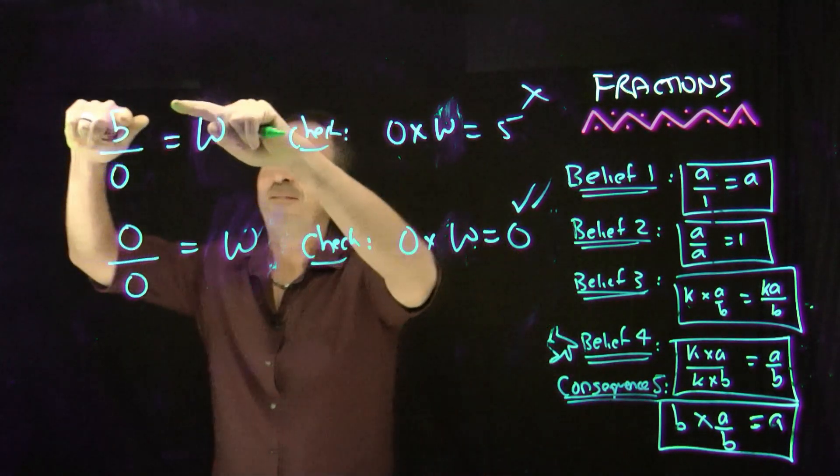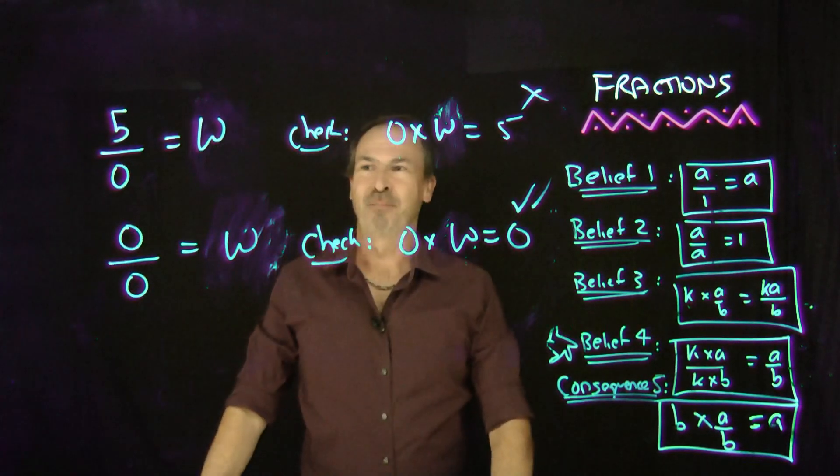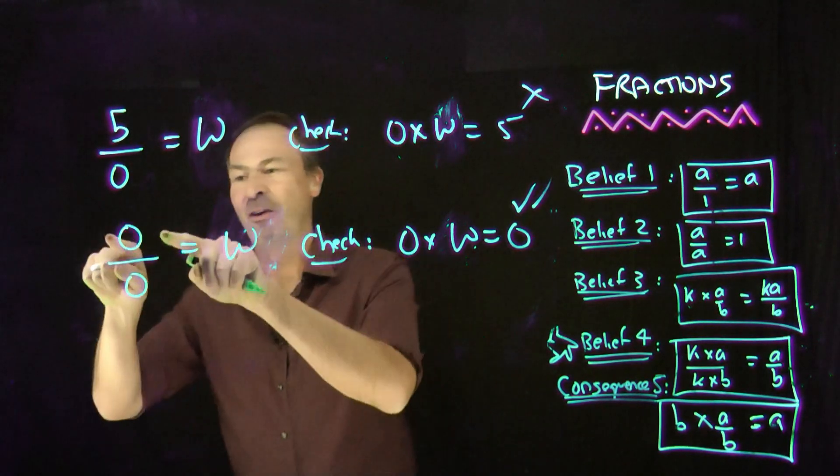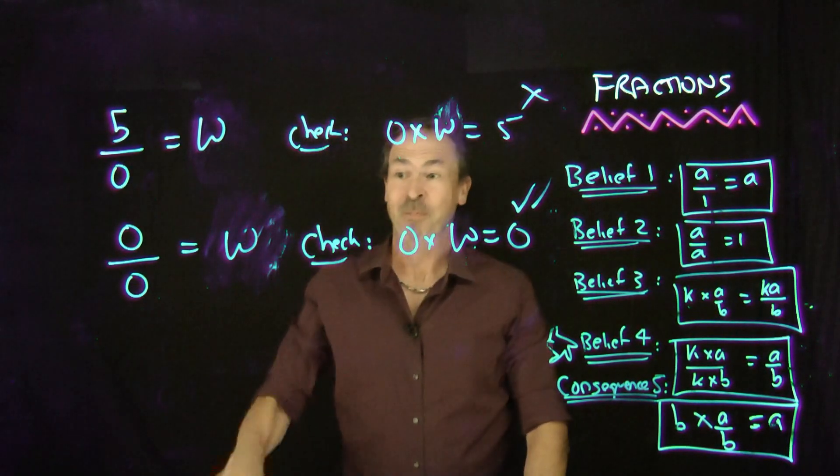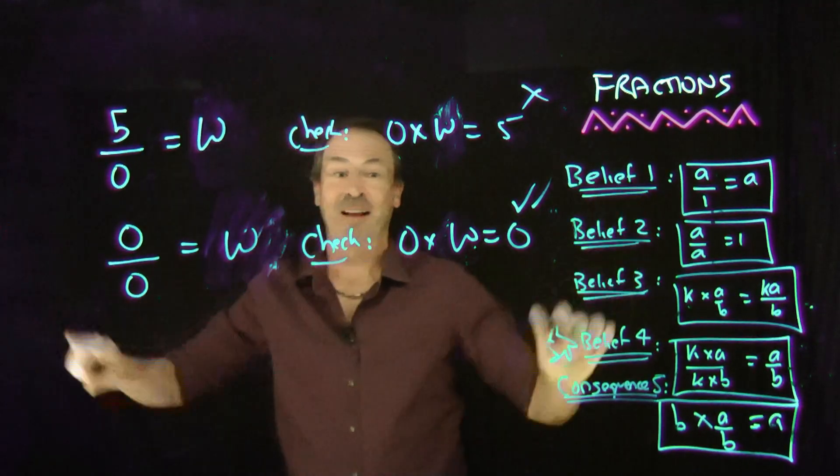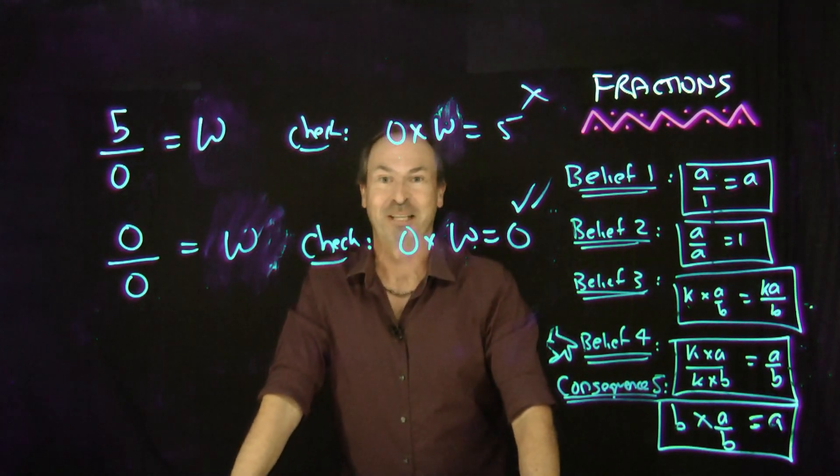So this example, 5 divided by 0, suffered the problem that no answer could possibly work. There's nothing in arithmetic that works for that. This one, 0 divided by 0, has kind of the reverse problem. Every possible thing actually works for that. It's just too open, too wide. Everything fits the check. Everything fits the arithmetic there. It's too dangerous.